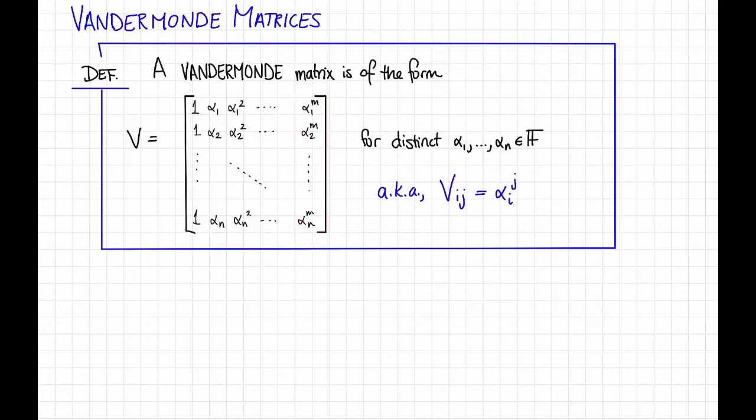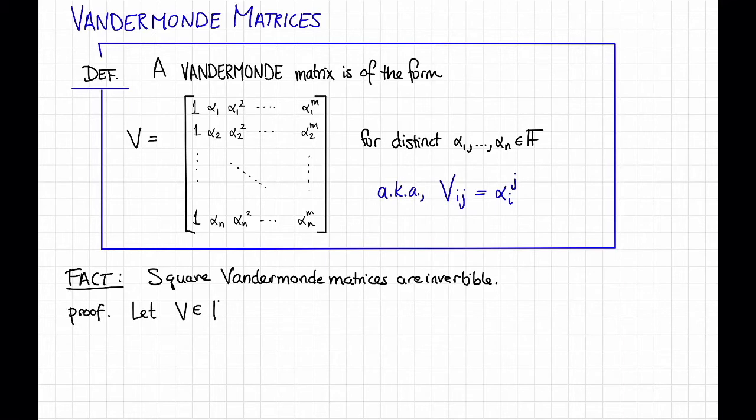A useful fact about Vandermonde matrices is that square Vandermonde matrices are invertible. Here's a quick proof. Let V be a square Vandermonde matrix. We want to show that V is invertible, which is equivalent to showing that the kernel of V is just 0. That is, we'd like to show that if V*A = 0 for some vector A, then A itself must be 0.